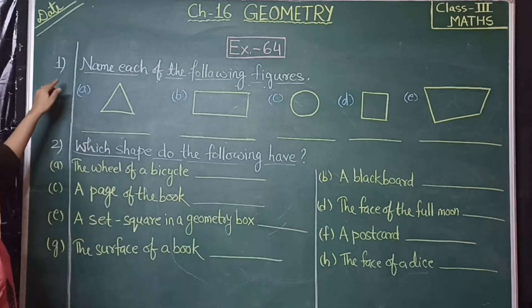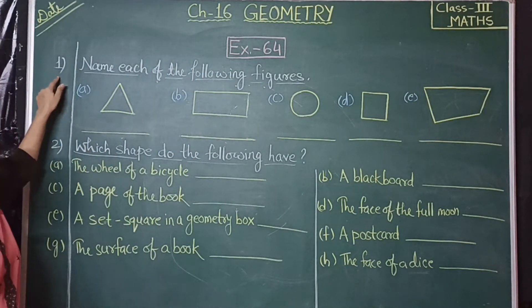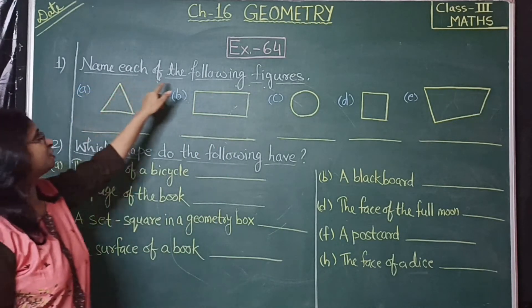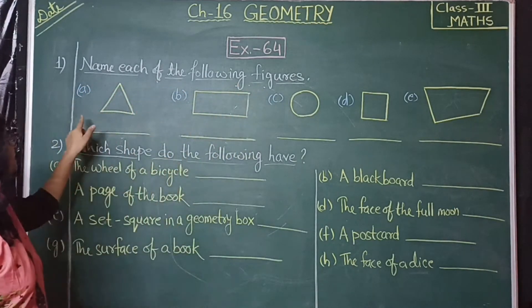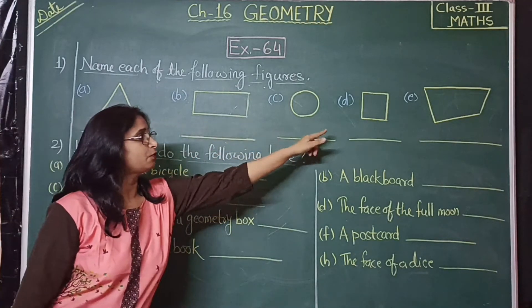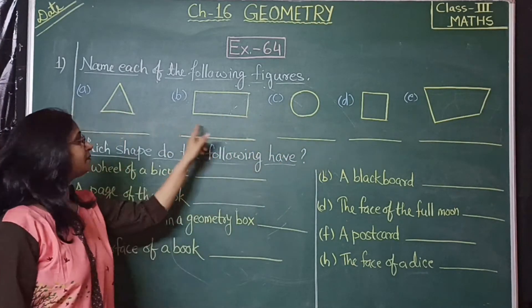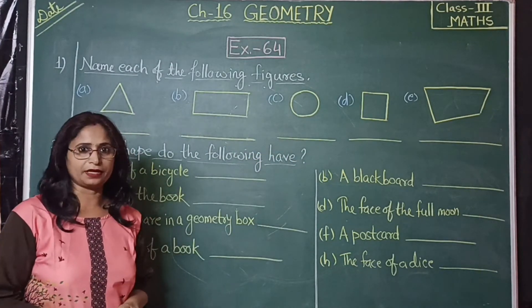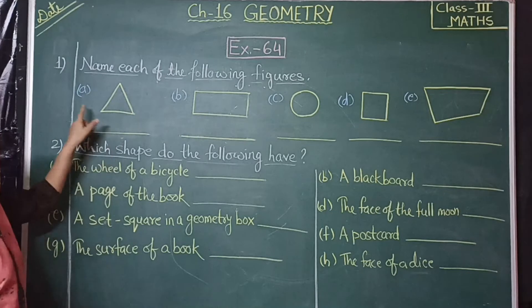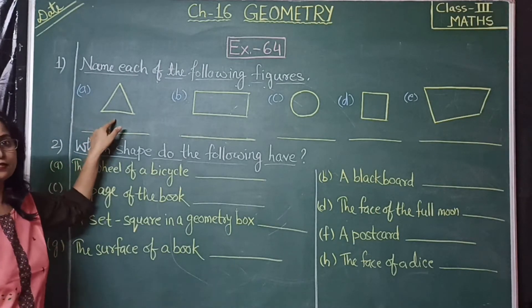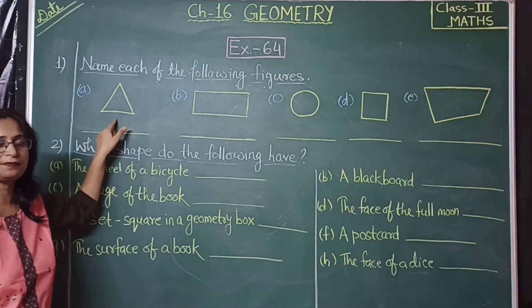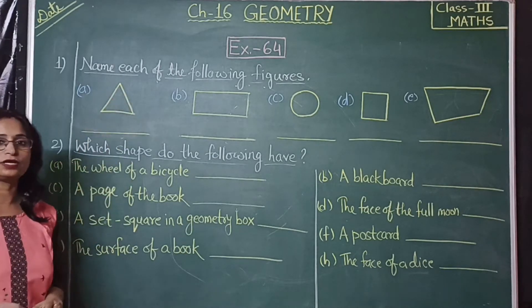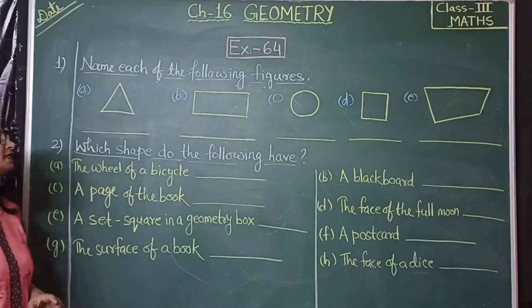The first question is: name each of the following figures. Here are the figures A, B, C, D, E. Which figure is this? Which shape has three sides and three corners? Yes, triangle!